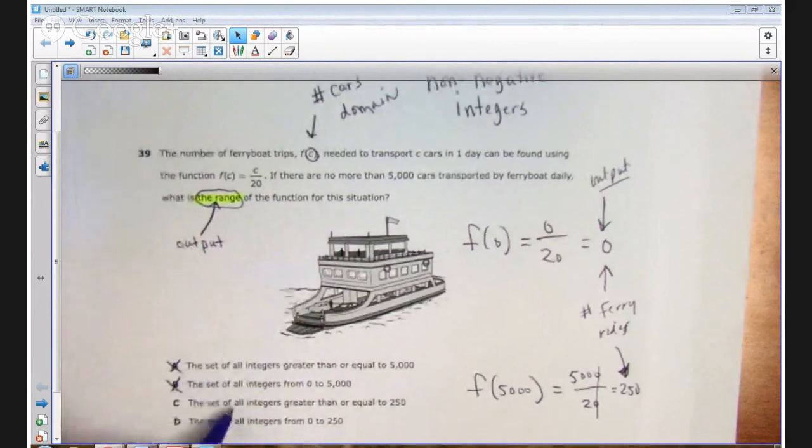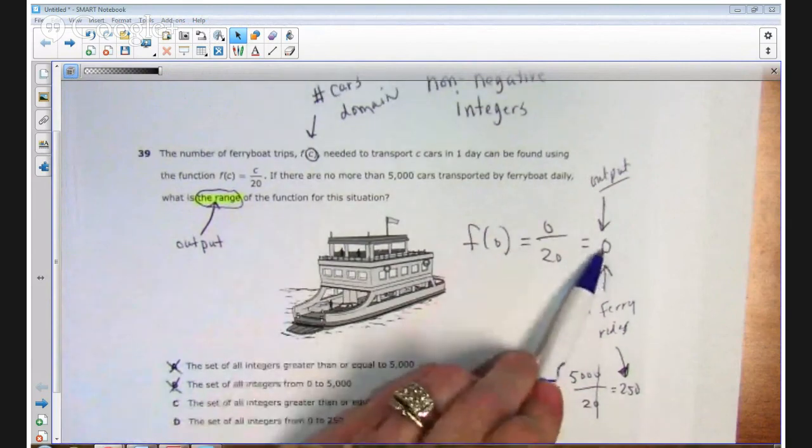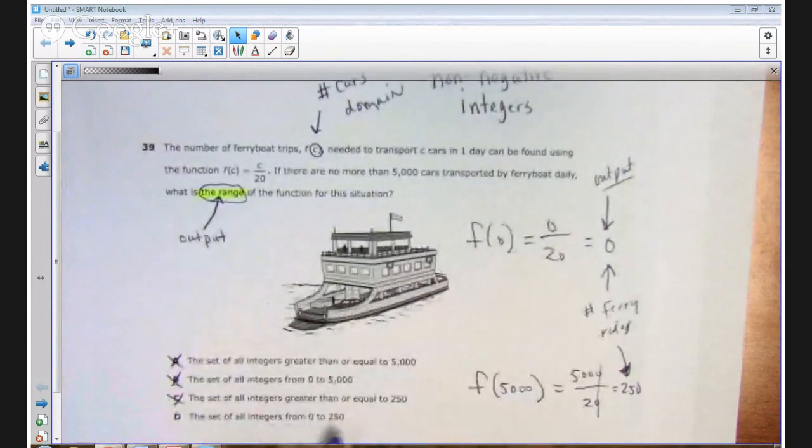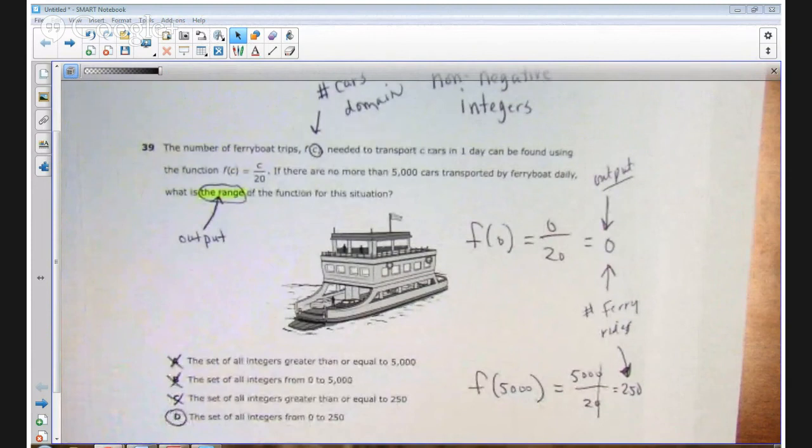C says the set of all integers greater than or equal to 250. Well, no, the integers would be between 0 and 250. And then, finally, the correct answer is the set of all integers from 0 to 250. So the correct answer in this situation would be answer choice D, the set of all integers from 0 to 250.